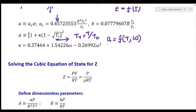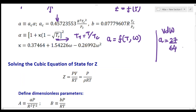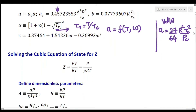If you recall, in the van der Waals equation of state, a was assumed to be constant. For van der Waals, a equals 27 over 64 times R squared Tc squared over Pc, so a was constant for a given substance since Tc and Pc are known. In Peng-Robinson, by contrast, a is a function of both temperature and omega.